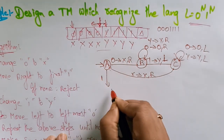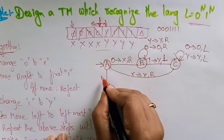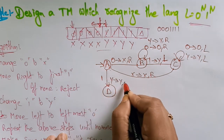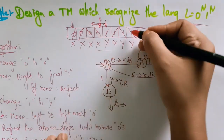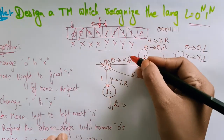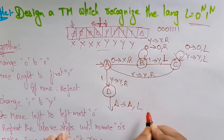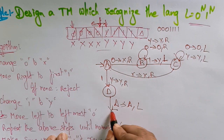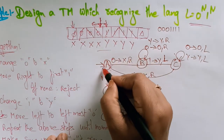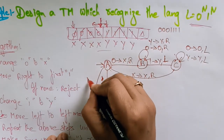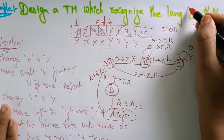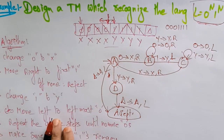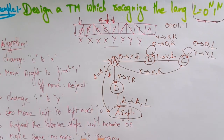Coming to state D: if y is there, y is replaced with y and the head moves right. Finally, when all zeros have been replaced with x and all ones replaced with y, the blank symbol (delta) is replaced with delta and the head moves left — then the string is accepted. This is how you construct the Turing machine that recognizes the language L = 0^n 1^n. Based on this algorithm you can construct the Turing machine. Thank you.